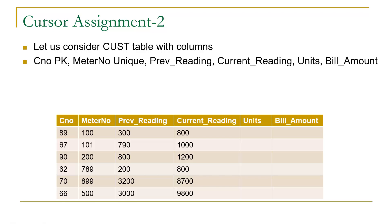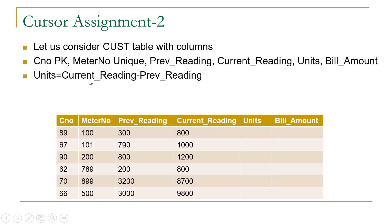This is the database of an electricity department used to calculate the electricity bill of each customer. Suppose we have six records in this table with customer numbers 89, 67, and so on. Every customer has a unique meter number. For every meter we store its previous reading and current reading. At present, units and bill amount are null.